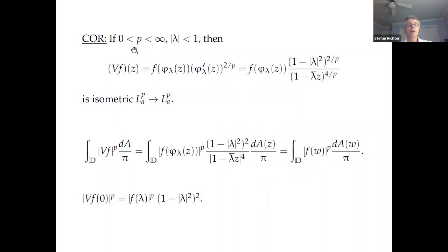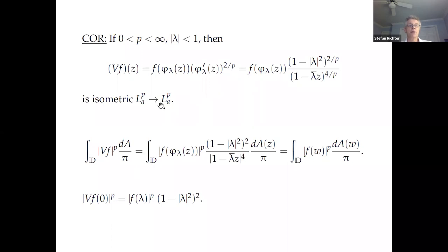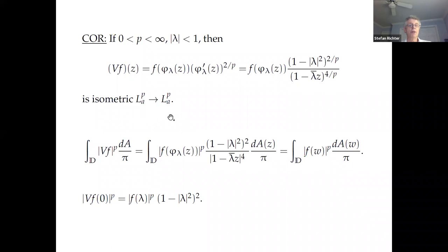An immediate corollary: for any p between 0 and infinity and any λ in the disk, the operator V_{p,λ} — where you compose f with φ_λ and multiply by the derivative to the 2/p-th power — is isometric from LpA to LpA. Taking the p-th power on both sides and performing the change of variables confirms the isometry. When you plug in z equals 0, V_{p,λ}f at 0 is f(λ), giving the factor (1 - |λ|²)^{2/p}.